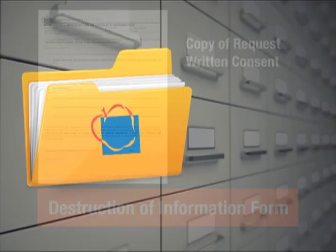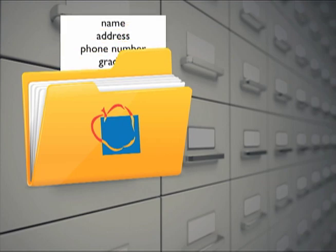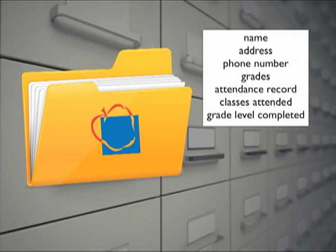Under AACPS student record policies, a permanent record will be maintained which may include your child's name, address, telephone number, grades, attendance record, classes attended, grade level completed, and year.